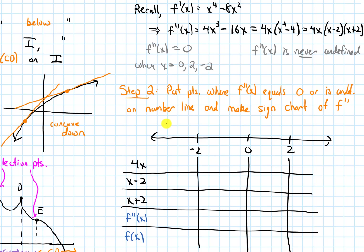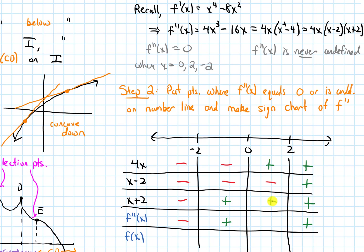For 4x: positive when x > 0, negative when x < 0. For x minus 2: positive to the right of 2, negative everywhere to the left. For x plus 2: positive when x > negative 2, negative when x < negative 2. Multiplying these signs together: three negatives give negative, then two negatives and a positive give positive, three positives give positive, and one negative with two positives gives negative.